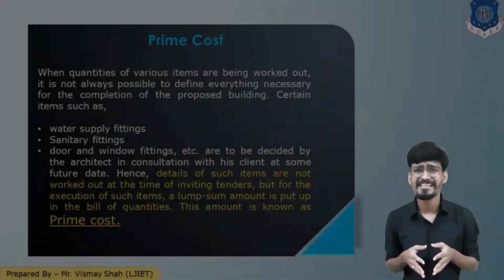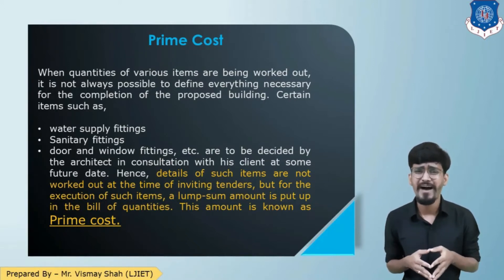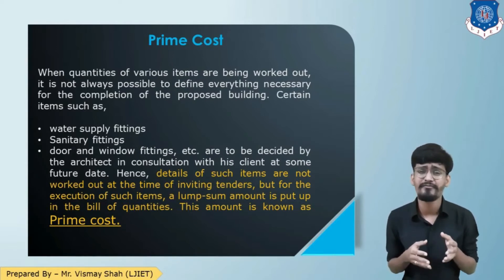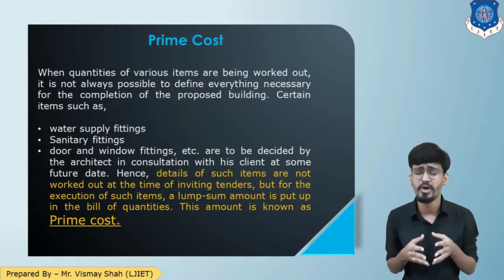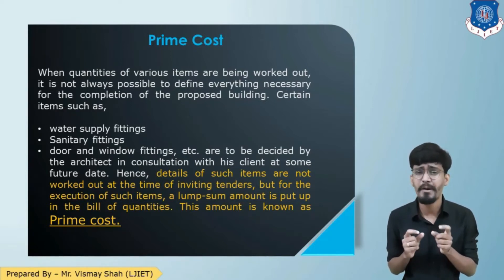Moving forward, the next is prime cost. When the quantities of different items of work are being worked out, it is not always possible to define everything necessary to complete the work. For example, water supply fittings, sanitary fittings, door and window fittings, etc. These are items which are finalized at the execution stage by the architect, owner, or owner's representative. A detail estimate is not prepared for such items, and a lump sum amount is provided as prime cost in the tender. That lump sum amount against this kind of item of work is known as prime cost.